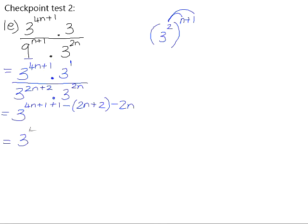If we simplify, that gives us 4n. Positive 1 add 1 is positive 2. If we distribute the negative into the brackets, we get negative 2n minus 2 and minus 2n. If we simplify the exponent, 4n minus 2n is 2n minus 2n is 0. Positive 2 subtract 2 is 0. And anything to the power of 0 is positive 1.